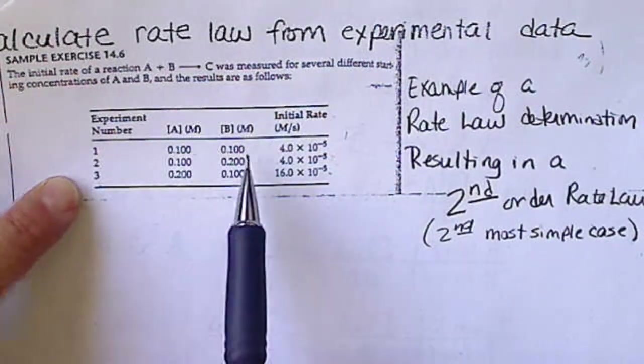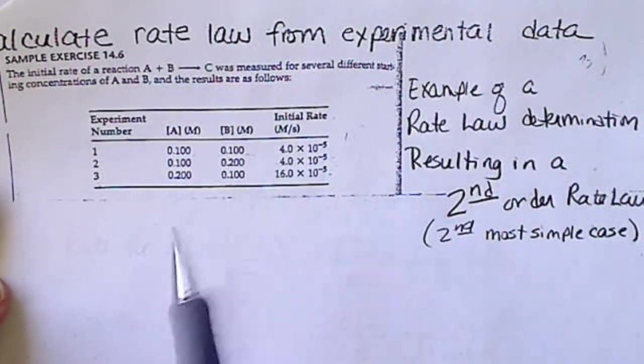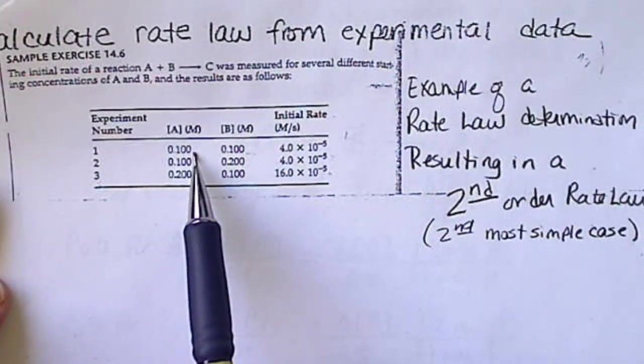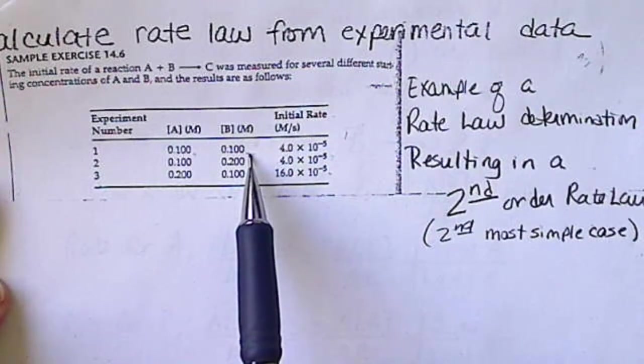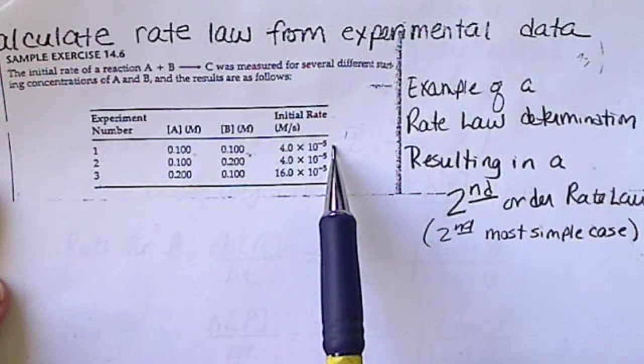We are in control of the initial concentrations. In this case, just to make the numbers easy, this is 0.1 molar A, 0.1 molar B. And somehow, we are able to measure the rate, and we write that down.